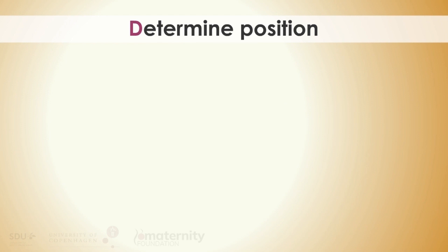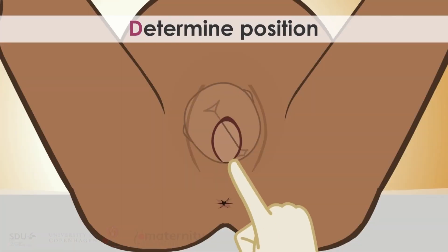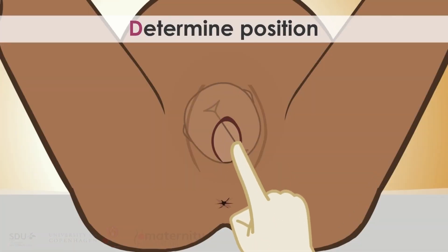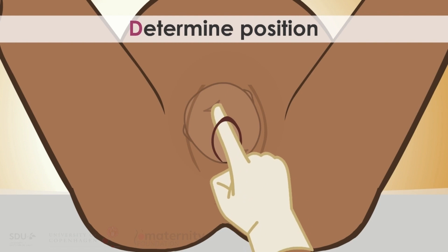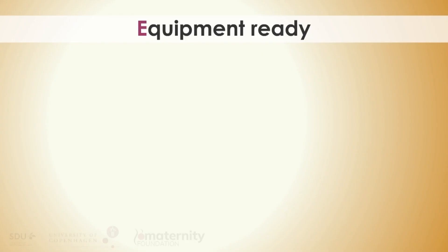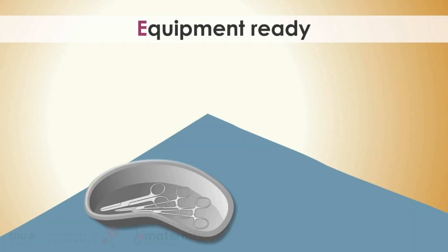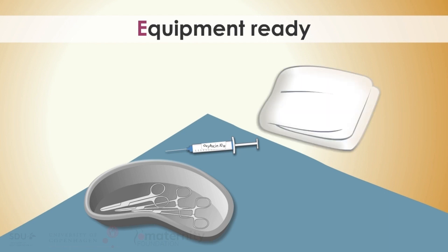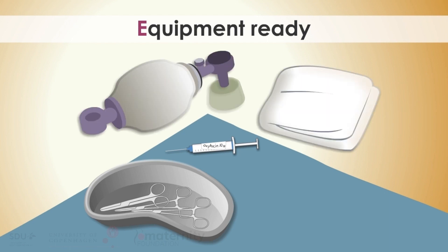Determine position: Locate the posterior fontanelle, triangular-shaped, with your index finger. This is important information before you can place the cup correctly. Equipment ready: delivery set, oxytocin for intramuscular injection to the mother after delivery, as well as misoprostol and tranexamic acid, towels, neonatal resuscitator, and vacuum extractor.